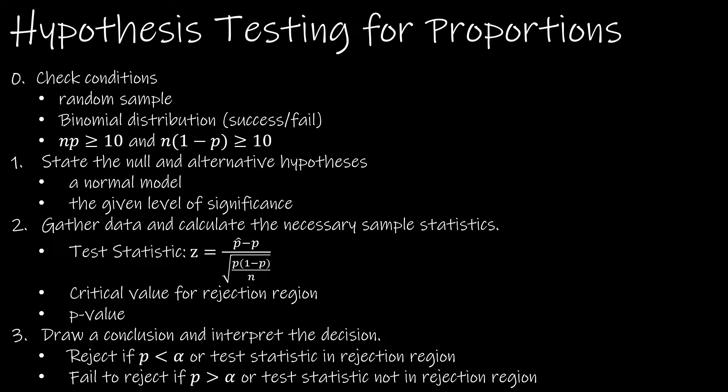The conditions are random sample, and then the binomial distribution - we need to check whether it's essentially a success-fail situation with a set number of trials. Then we have to check if np is greater than 10 and n times 1 minus p is greater than or equal to 10. So those are the conditions we will check.